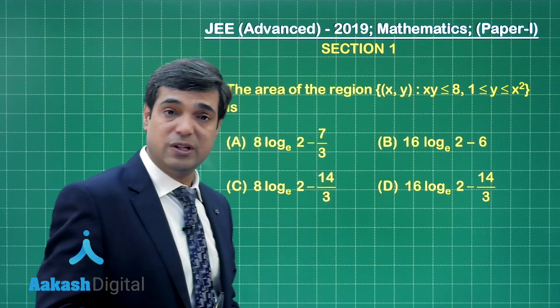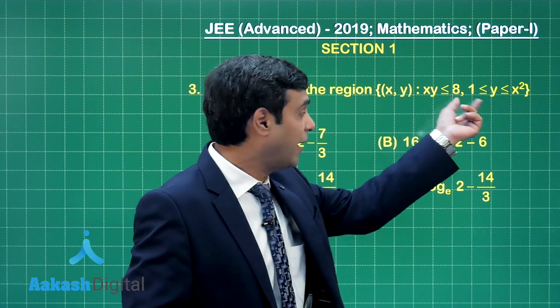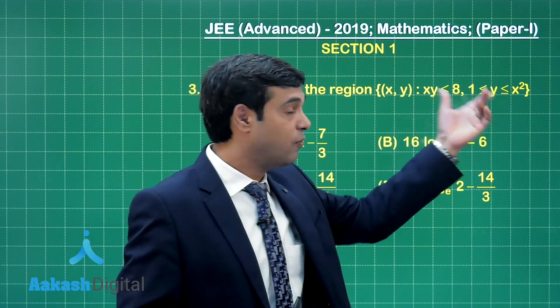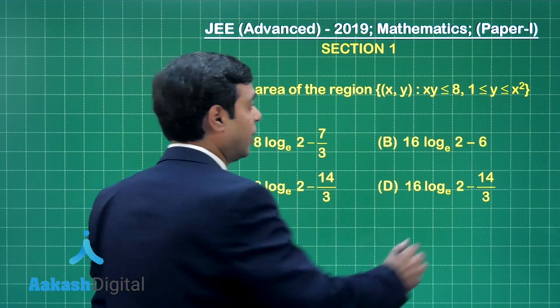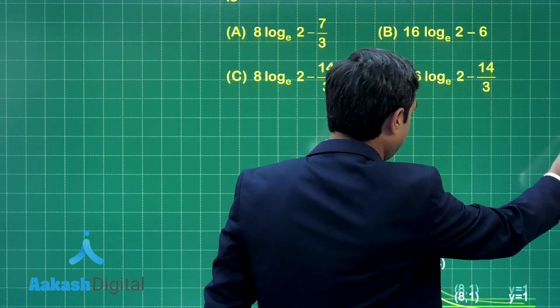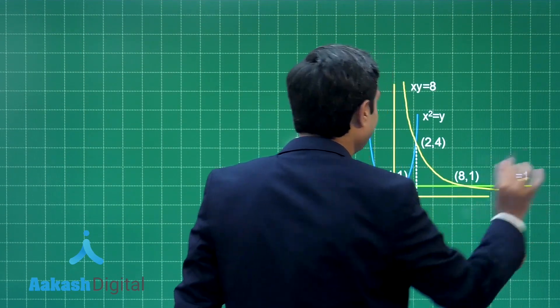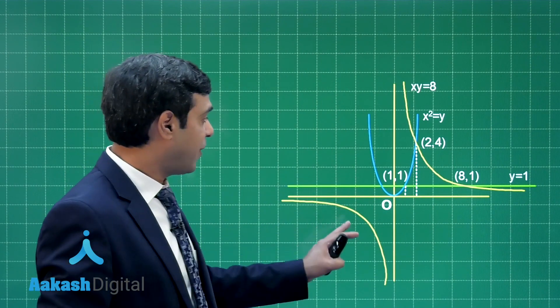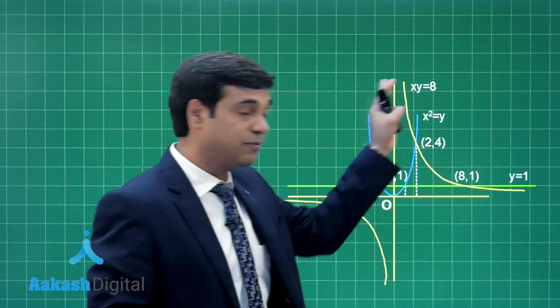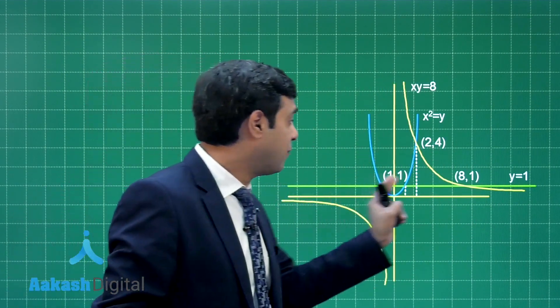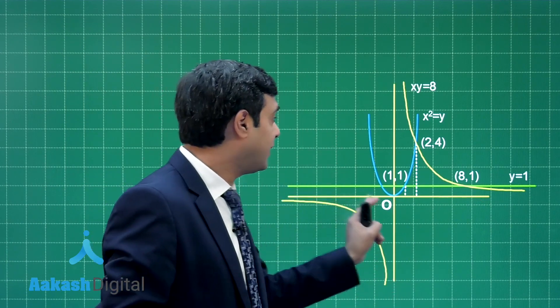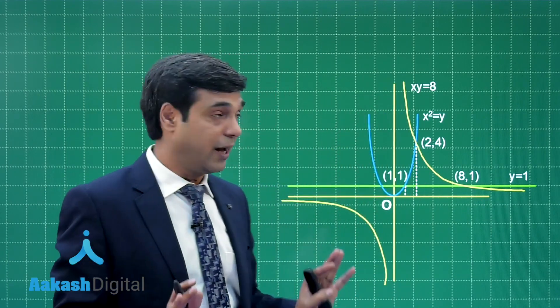If we talk about xy equals 8, it is the hyperbola. y equals 1 is a straight line. y equals x square is the parabola. So, let us draw these three curves first. We can see the drawing would be like this. So, we have x axis, y axis, hyperbola xy equals 8, line y equals 1 and the parabola x square equals y.